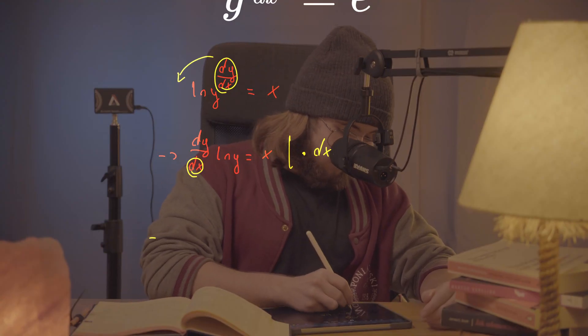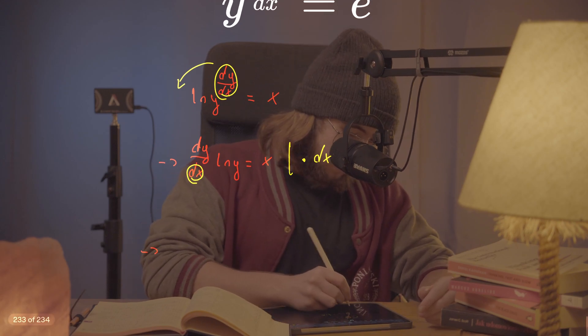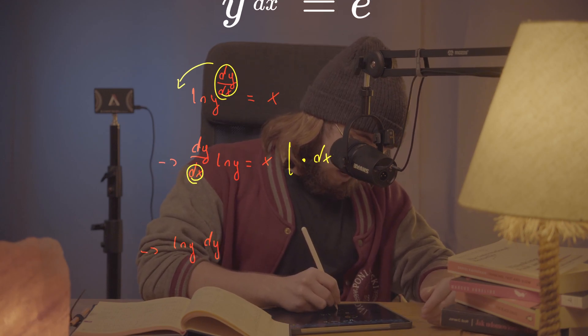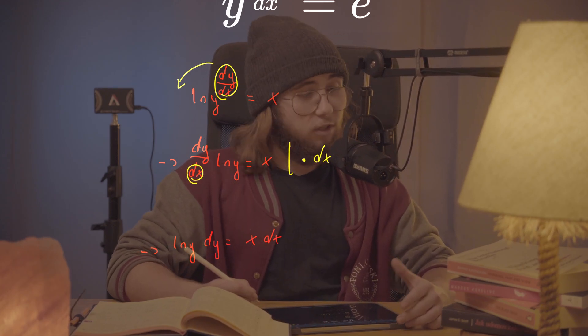I'm just gonna write this thing as natural log of y dy equal to x dx. What can I do about it? Nothing.